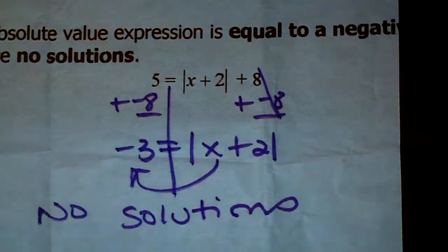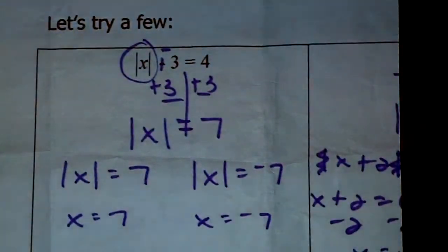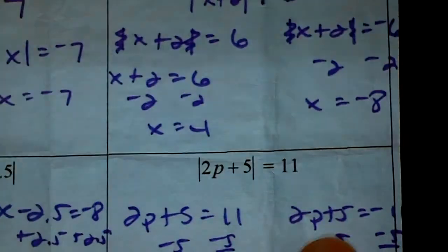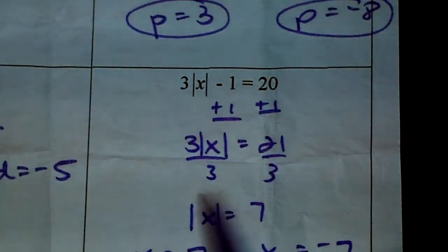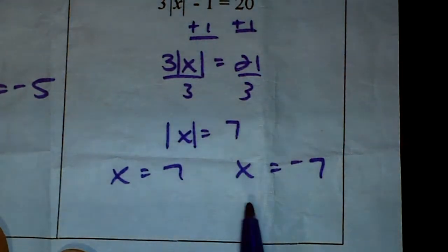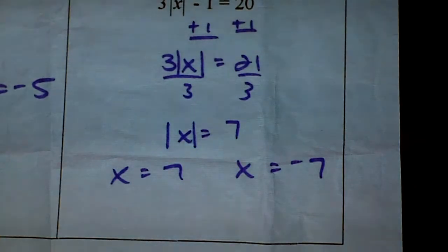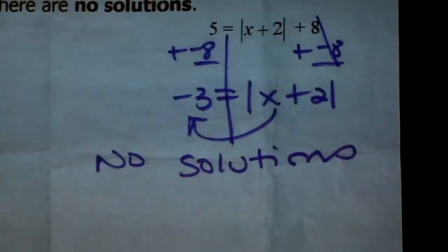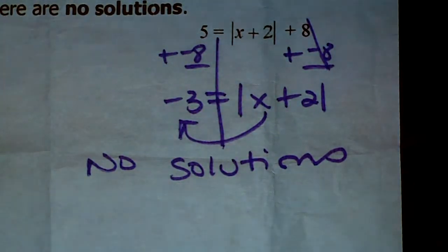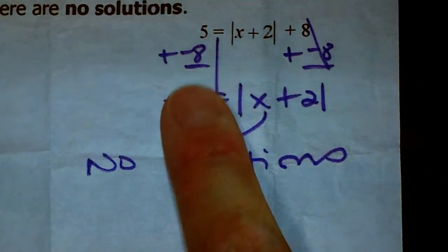On the front examples, the absolute value was always equal to a positive number — 7, 6, 8, 11. When you rewrite as two cases, the absolute value symbol is gone. But if, after isolating the absolute value, you see it equals a negative number — like |X + 2| = -3 — there's no value you can plug in to make that true. The answer is no solutions.